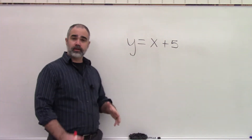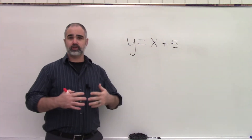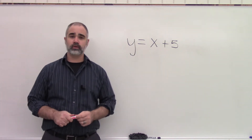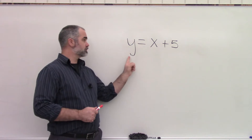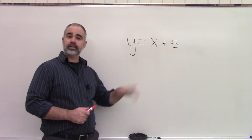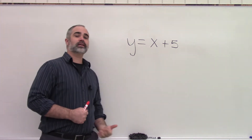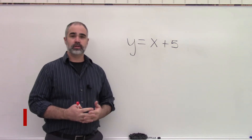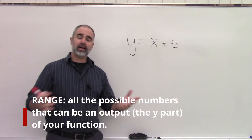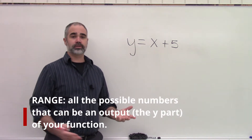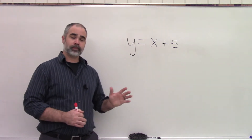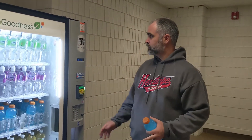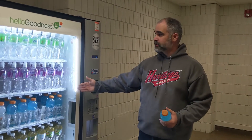Now, the things that come out of your vending machine — could be soda or snacks or bottled water or whatever it is that you ordered — in a function, the output is your Y variable. The things that come out of your function are called the range. So all the possible numbers that you can get out of your function are called the range. The range of the machine is simply the different options of things that can come out.